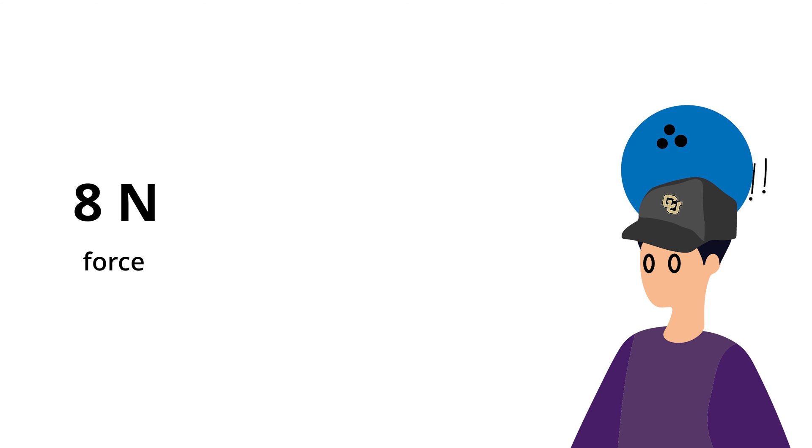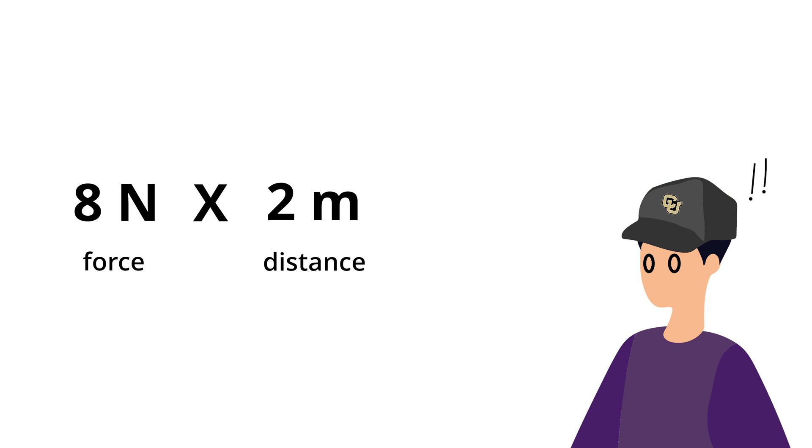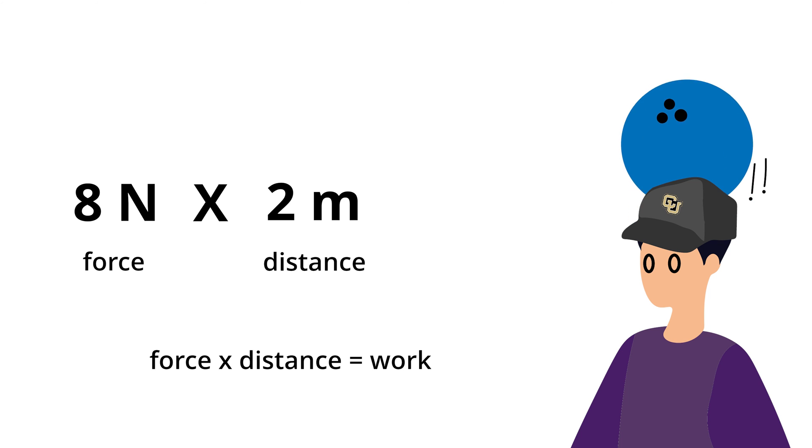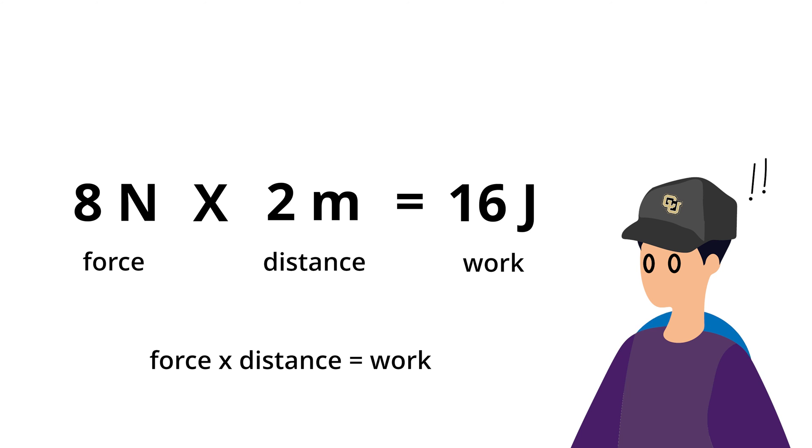Let's say I applied 8 newtons of force and lifted the bowling ball up 2 meters. The total work of moving the ball up 2 meters would be, as defined by our equation, the product of 8 newtons, the force, and 2 meters, the distance, equals 16 joules of work.